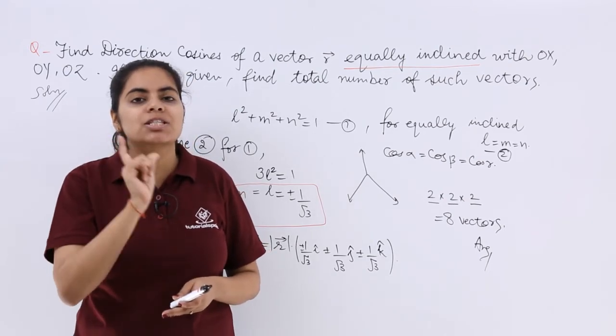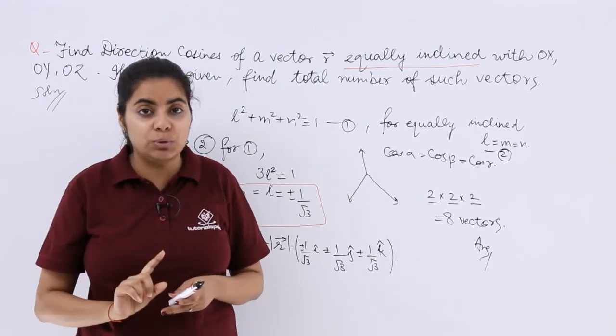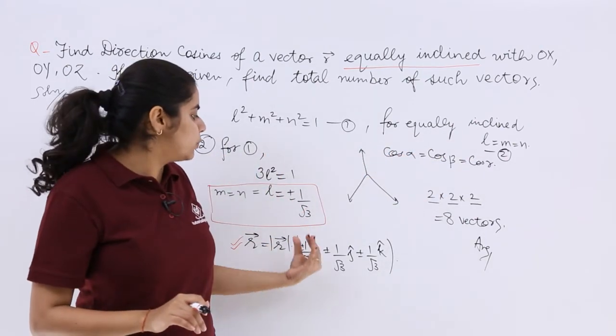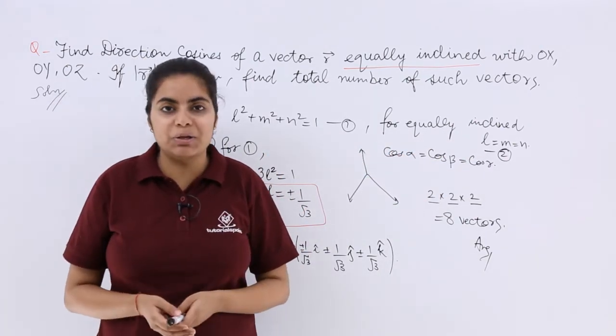Equal inclination means cos α is equal to cos β is equal to cos γ, L is equal to M is equal to N. Use this relation, put the values, get the answer as 1 by root 3 each.